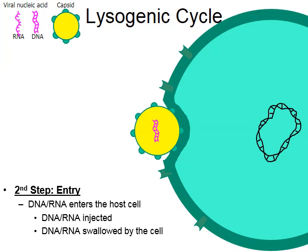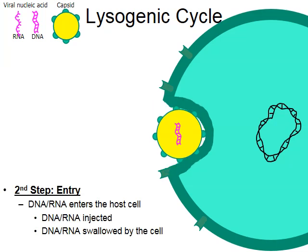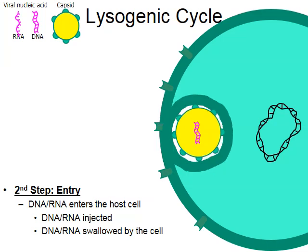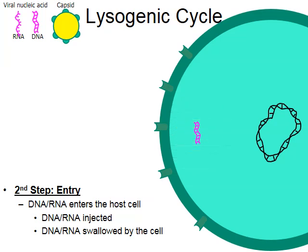Notice how an indentation has begun and more and more of the virus is being taken into the host until the entire virus has been taken into the host cell. Enzymes inside the virus will cause the capsid to break down, releasing the nucleic acid into the cytoplasm of the host. The viral DNA will then be spliced into and combined with the DNA of the host cell.